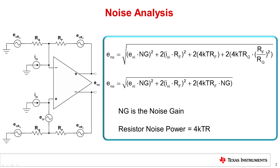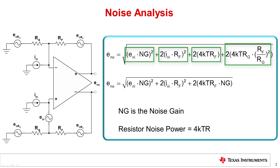The noise analysis of a fully differential amplifier is very similar to that of a standard single-ended op amp. The amplifier itself has three sources of noise: the differential voltage noise, and two current noise sources, one at each of the amplifier's inputs. The two current noise sources are equal in value but uncorrelated, similar to a single-ended op amp. The differential output noise transfer function of the FDA has four distinct terms.